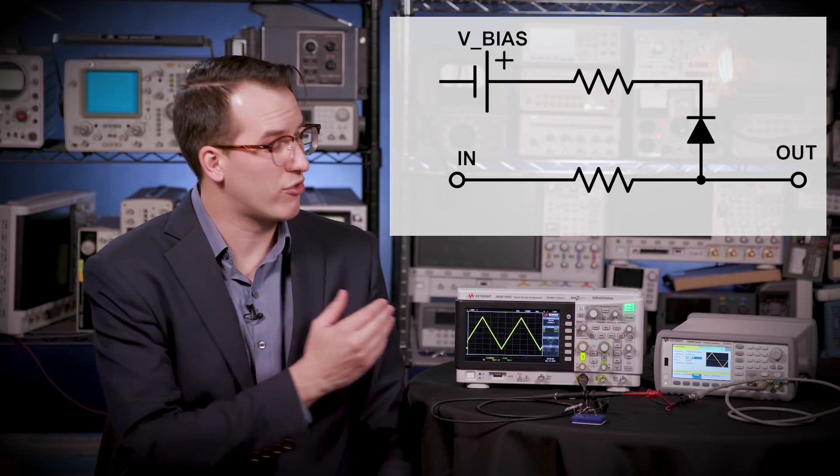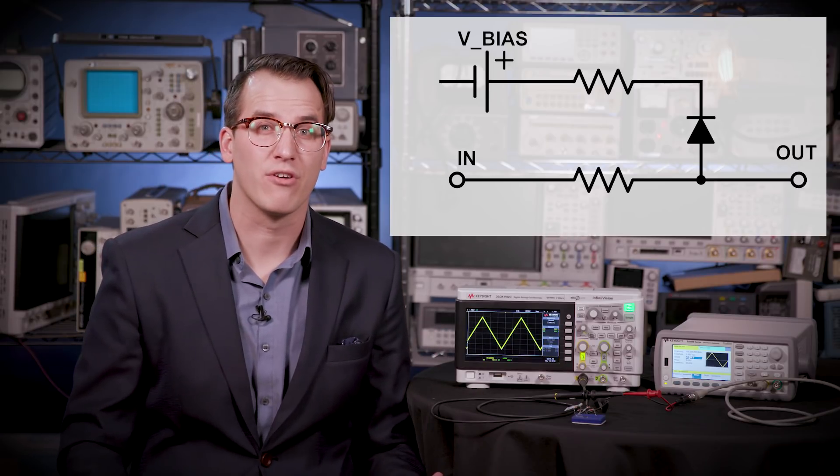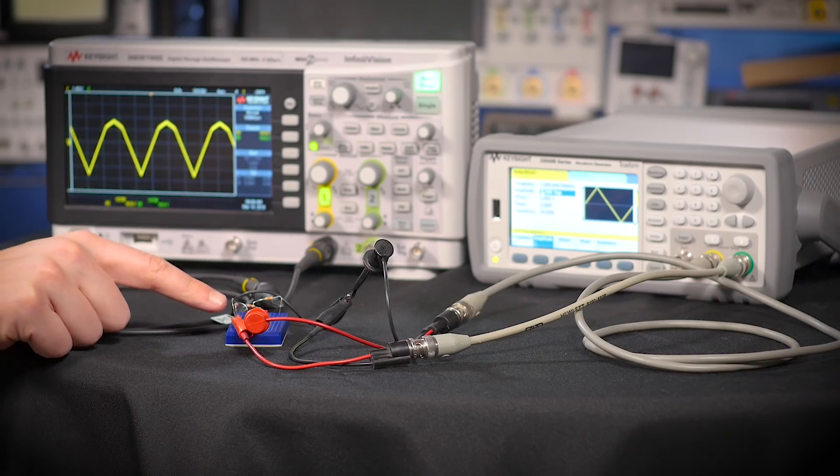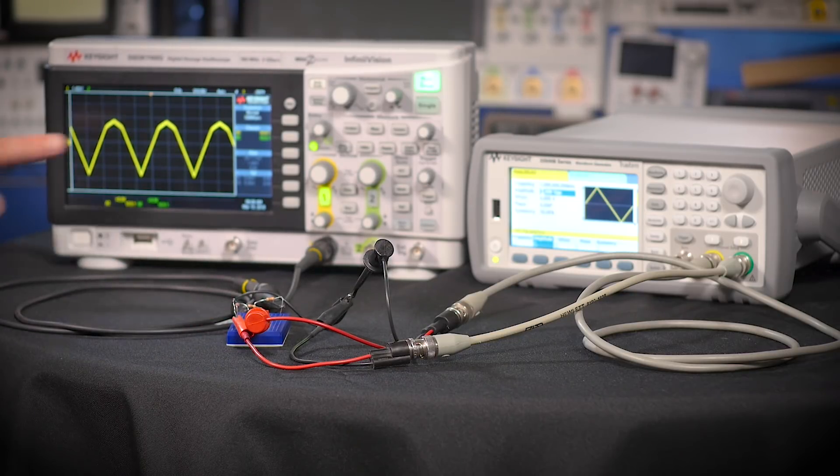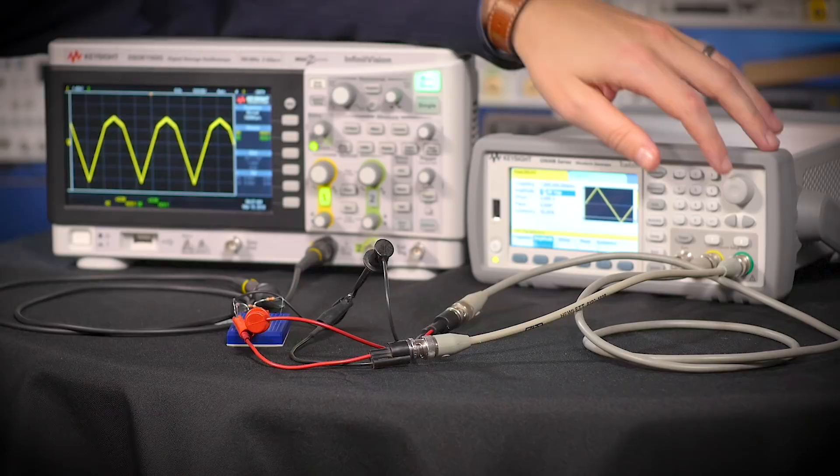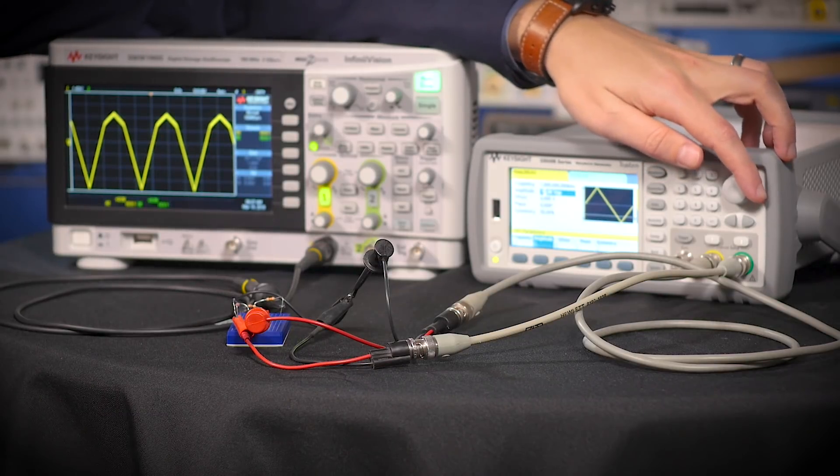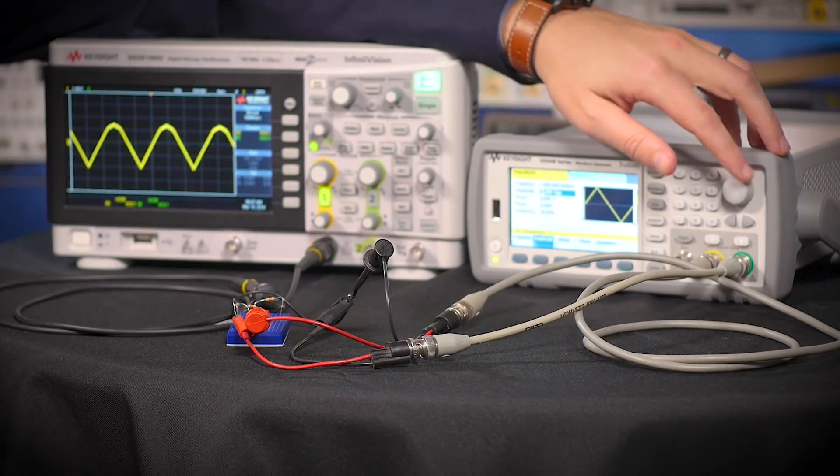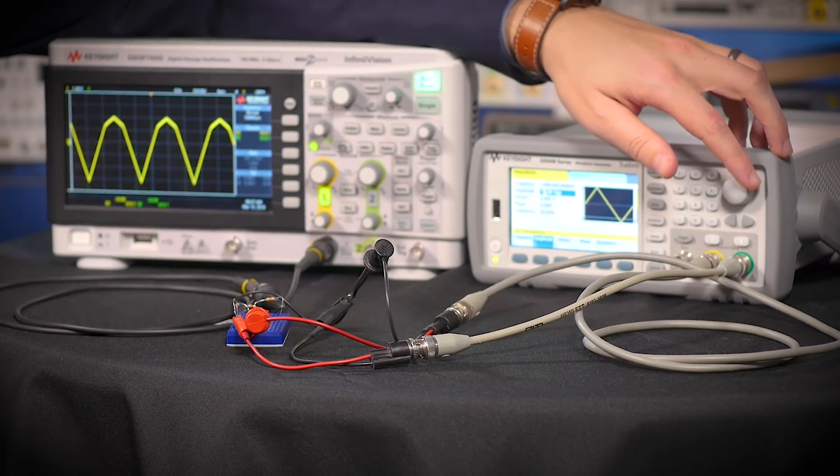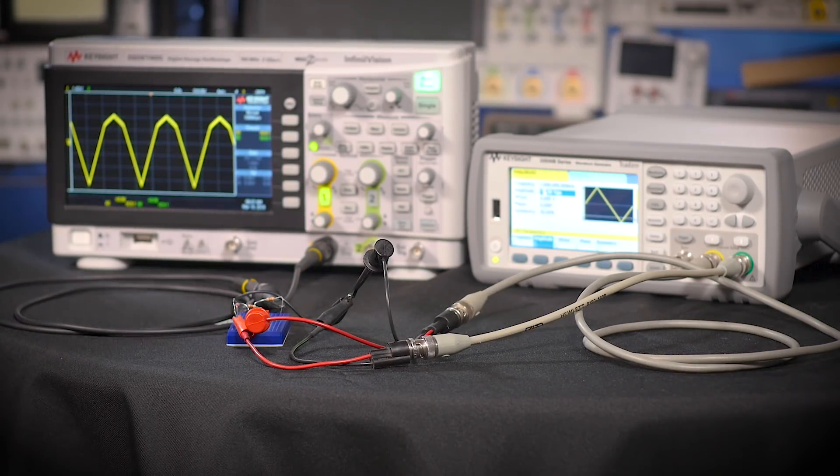If we start with a standard triangle wave, the signal looks normal on the scope. But when we add the diode and resistor clamp attached to a positive voltage reference, the signal starts to clamp. If I adjust the reference voltage, we'll see the clamping levels start to change. So when I'm low, there's no clamping, and as I get to higher voltage levels, we can see the clamping at the top of the screen. You could do the same thing for negative voltages also.